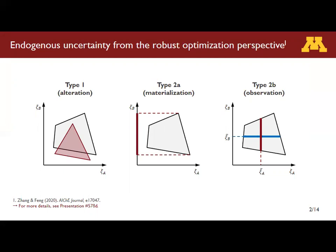Type 1 can alter the size and shape of the uncertainty set. In Type 2a, decisions determine whether an uncertain parameter materializes — meaning whether the uncertain parameter becomes physically meaningful is determined by some decision, so decisions can affect the dimensionality of the uncertainty set. In Type 2b, decisions determine whether and when the true value of an uncertain parameter is observed. In our recent paper, we also discuss the differences of these three types. For more detail, please see talk number 57HD.